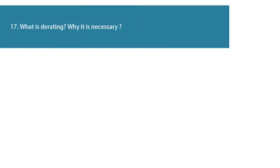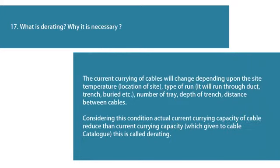Question 17: What is derating and why is it necessary? The current-carrying capacity of cables changes depending on the site temperature, location of the site, type of run — whether it runs through a duct, trench, buried, etc. — number of trays, depth of trench, and distance between cables. Considering these conditions, the actual current-carrying capacity of the cable is reduced compared to the current-carrying capacity given in the cable catalog. This reduction is called derating.